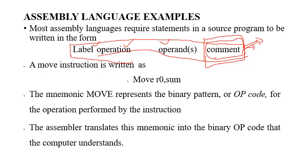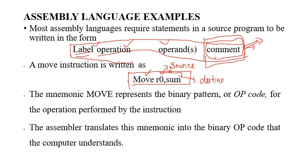Taking the example of 'MOVE R0, sum': here the label is not present. We have a mnemonic and operands. Among the operands, R0 is the source operand and sum is the destination operand. What it does is: the MOVE operation copies the content present in R0 and places it in the memory location represented by sum.